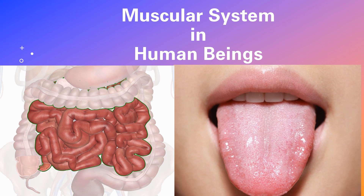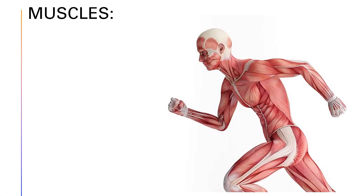Let us begin with a new topic: the muscular system in human beings. The fleshy parts in our body are called muscles. It is very important for an organism to move, and this movement is brought about by the contraction and relaxation of muscles, as well as bones, which bring about movement in the body of the organism.